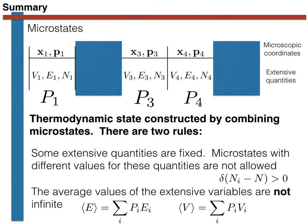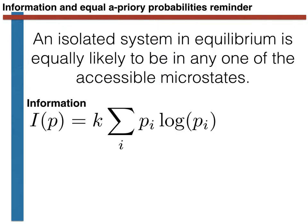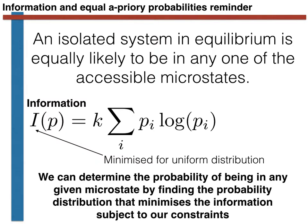We now need to recall another idea from the original video on statistical mechanics: namely, the principle of equal a priori probabilities. This principle states that an isolated system is equally likely to be in any one of the accessible microstates. It is here that information comes in. The information contained in a probability distribution is given by the expression shown here, and the information is minimized when the probability distribution is uniform. The critical realization is that we can determine the probability of being in any given microstate by finding the probability distribution that minimizes the information, subject to the constraints on the average values of the extensive thermodynamic variables.